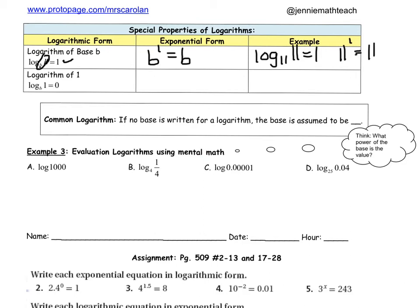The next special property is anytime you see a log where the answer is 1 right there. Anytime you see that, the log of 1, your answer will be 0. Why is that? Because if we rewrite it, we'll have b to the 0 equals 1. We learned earlier this year that anything to the 0 power equals 1.